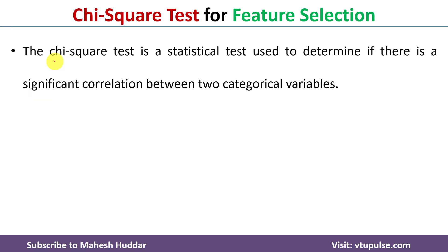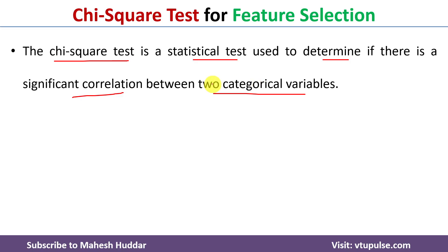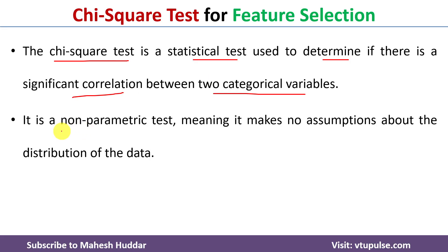Now we will see what is a chi-square test. Chi-square test is a statistical test used to determine if there is a significant correlation between two categorical variables — that is, whether there is a correlation between the given feature and the target. If there is a correlation, we keep that feature; otherwise, we remove it. Chi-square test is a non-parametric test; it makes no assumption about the distribution of the data.